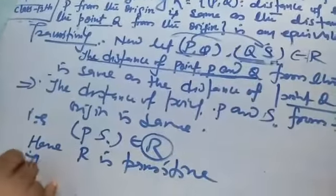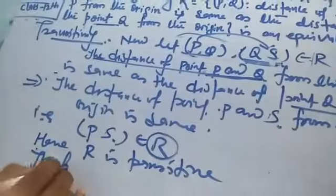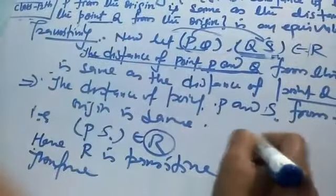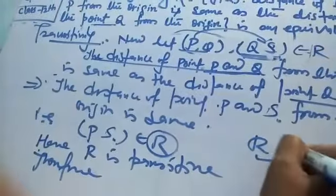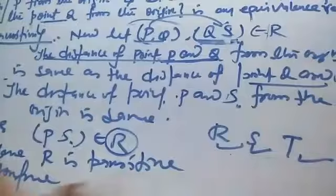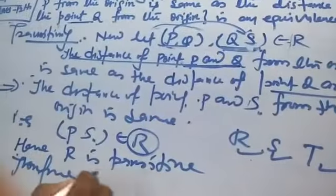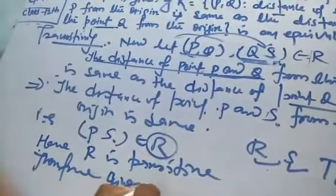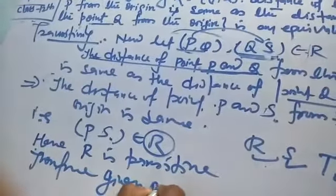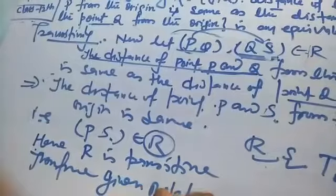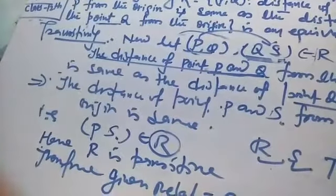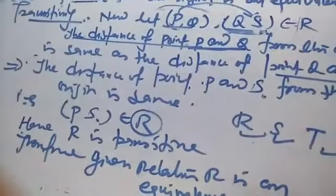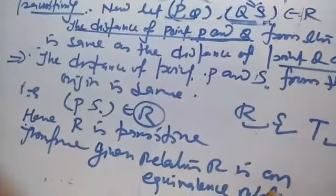Therefore, since all three conditions are satisfied — R is reflexive, R is symmetric, and R is transitive — therefore the given relation R is an equivalence relation.